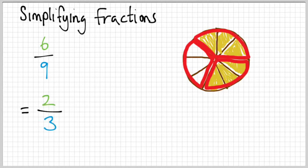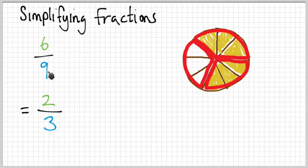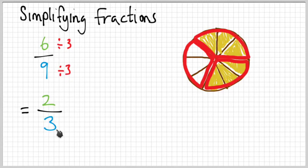That's what reducing a fraction means: six over nine now becomes two over three — these are exactly the same. The mathematical way to do it is to divide both the numerator and the denominator by their greatest common factor. What goes into both six and nine? Three does. Six divided by three is two, and nine divided by three is three — it's the opposite of finding a common denominator.